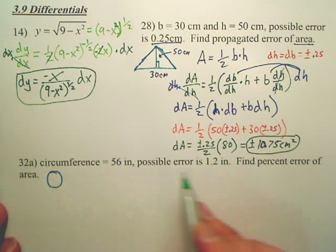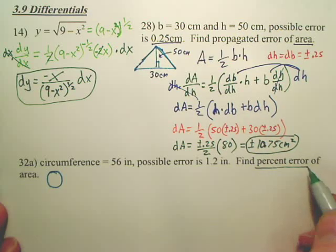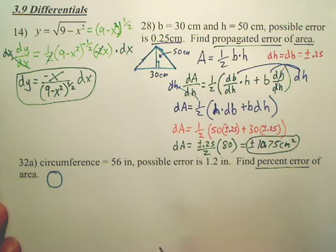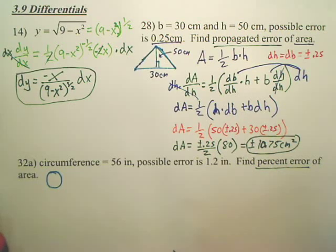So I want to find my percent error. Is there a difference between percent error and propagated error? Percent error is just, you'll see, it's propagated error made into a percent, you'll see.